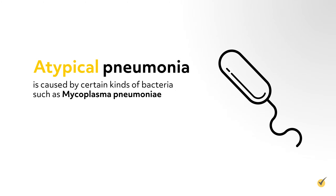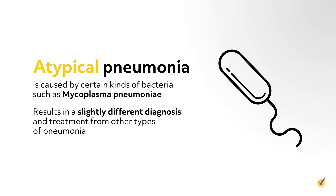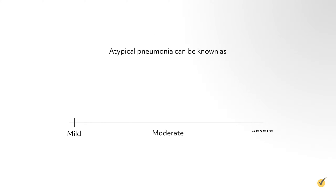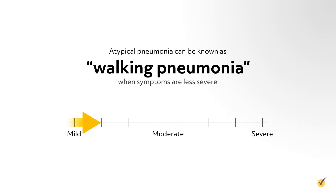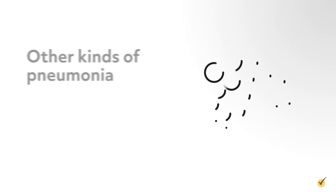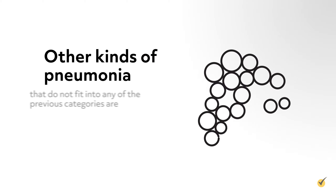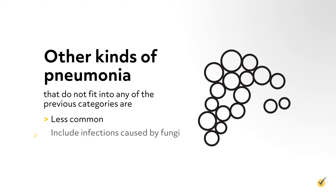Atypical pneumonia is caused by certain kinds of bacteria, such as Mycoplasma pneumoniae, and results in a slightly different diagnosis and treatment from other types of pneumonia. Atypical pneumonia can be known as walking pneumonia when symptoms are less severe. Other less common kinds of pneumonia include infections caused by fungi.